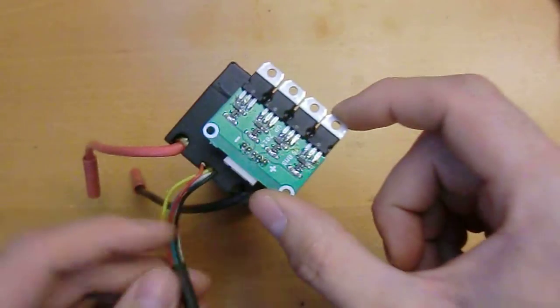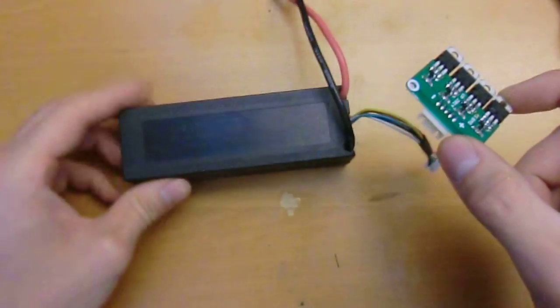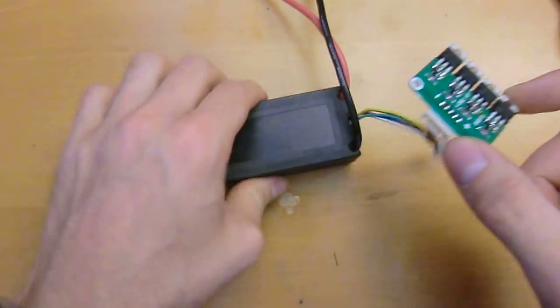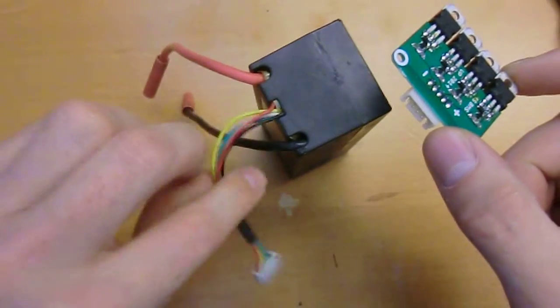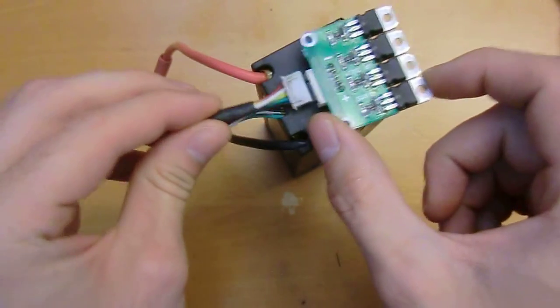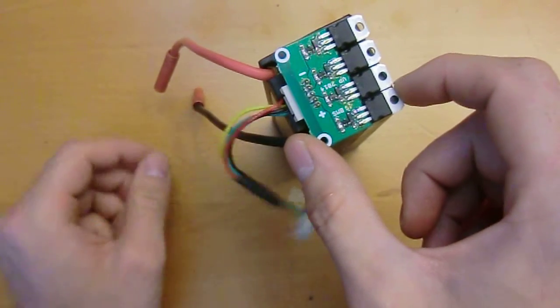And this one is placed on this 5 amp hour hard case Hobbiking cells. And you just connect the balancing lead to your PCB and mount it here.